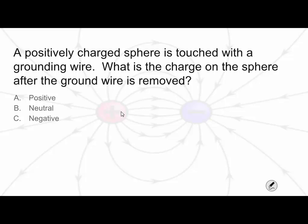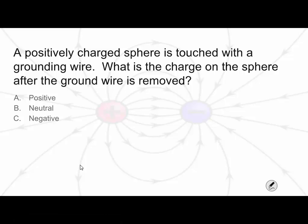Next question: a positively charged sphere is touched with a ground wire. What is the charge on the sphere after the ground wire is removed — A, positive; B, neutral; or C, negative? The answer is B, neutral. Whenever you connect something to the ground, which is a large neutral object, it makes the object it's touching neutral as well. Since our object was positively charged, electrons from the ground come up into the sphere, making it neutral.